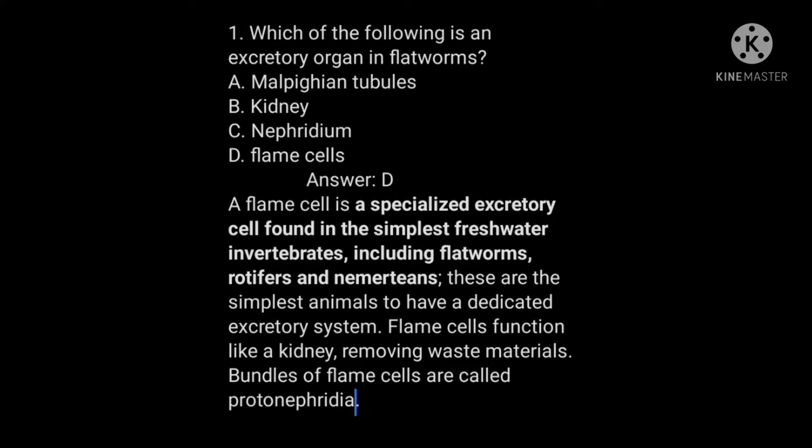A flame cell is a specialized excretory cell found in the simplest freshwater invertebrates, including flatworms, rotifers, and nemerteans. These are the simplest animals to have a dedicated excretory system. Flame cells function like a kidney, removing waste materials. Bundles of flame cells are called protonephridia.